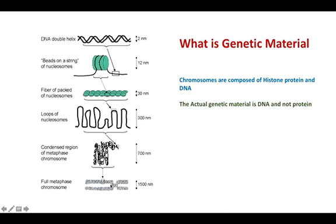If we look at this picture, the highly condensed form of histone and DNA makes a chromosome. As a unit, we take what is called the nucleosome, which is composed of a histone octamer around which two strands of DNA are wrapped. If you remove the histone octamer, you are left with purely DNA. This pure DNA is called the genetic material. Basically, it is this DNA that undergoes recombination — the recombination does not involve the histone protein.